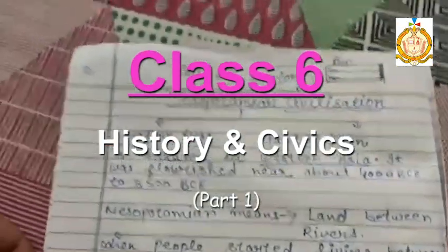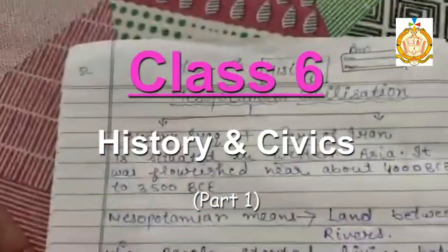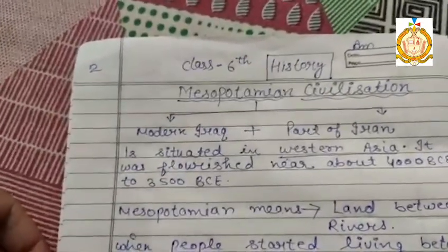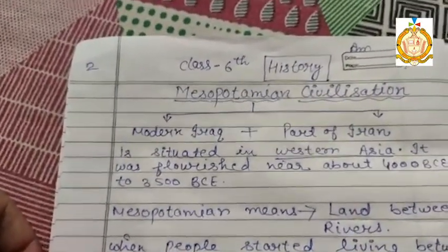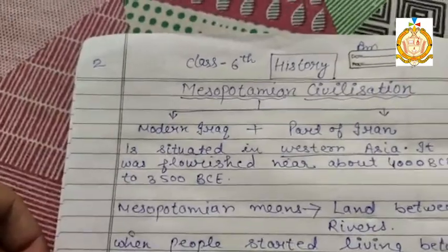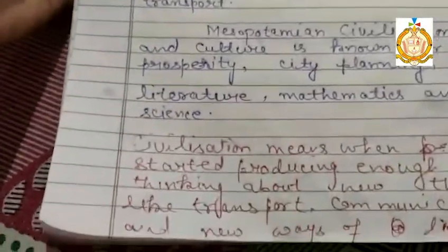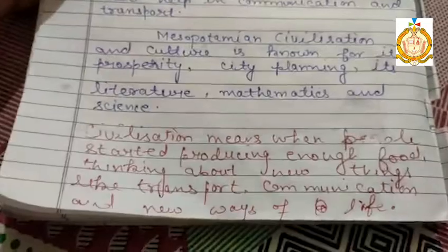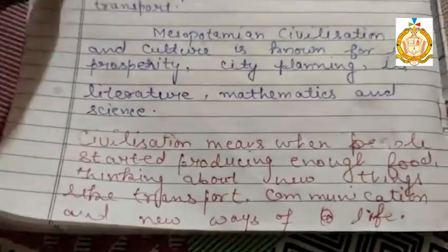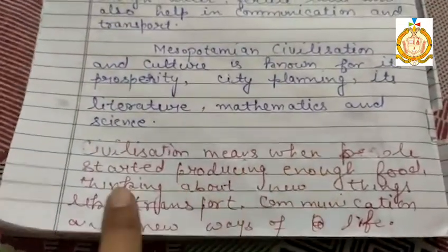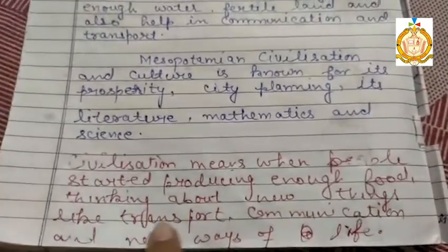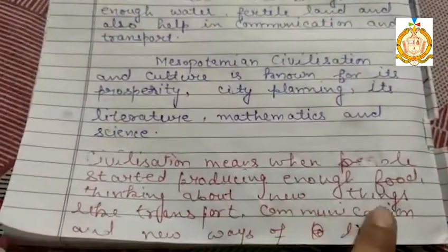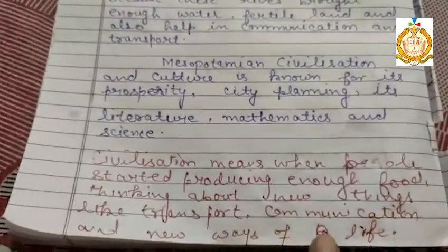Good morning students, myself Aman. Today I'm going to teach sixth standard history subject and let's start from the chapter on Mesopotamian civilization. Civilization means when people started producing enough food and thinking about new things like transport, communication, and new ways